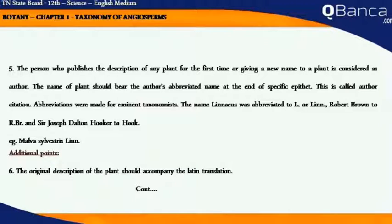The person who publishes the description of any plant for the first time, or gives a new name to a plant, is considered the author. The name of the plant should bear the author's abbreviated name at the end of the specific epithet — this is called author citation. Abbreviations were made for eminent taxonomists: Linnaeus was abbreviated to L. or Linn., Robert Brown to R.Br., and Sir Joseph Dalton Hooker to Hook.